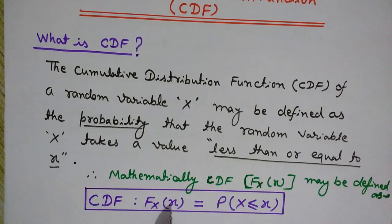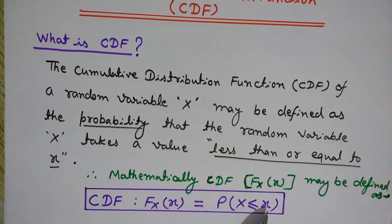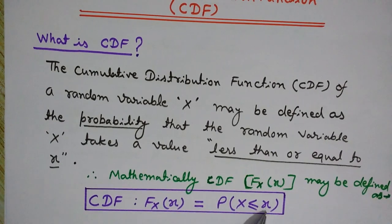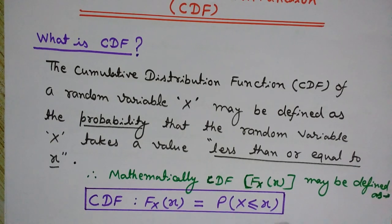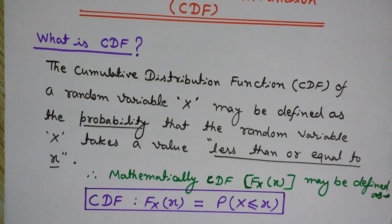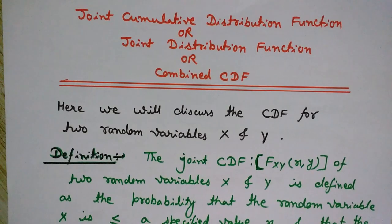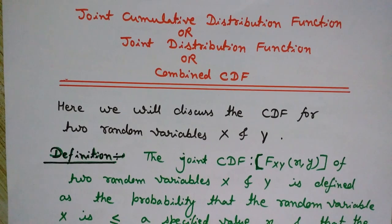So the CDF F(X) equals the probability that the random variable X is less than or equal to x. Here capital X is the random variable, and x represents the values the random variable takes from the sample space, which contains all possible outcomes of an experiment. Now let's come back to our topic: the joint cumulative distribution function.